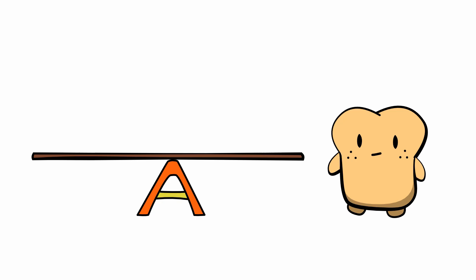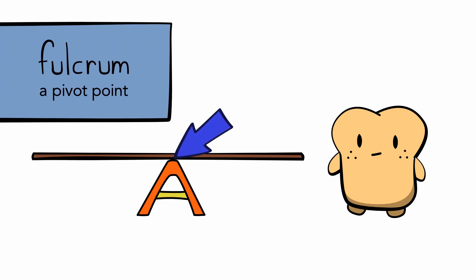Every lever is made up of some kind of sturdy material. The less it bends, the better. Every lever also needs to have a fulcrum, which is the pivot point where the lever will rotate around.